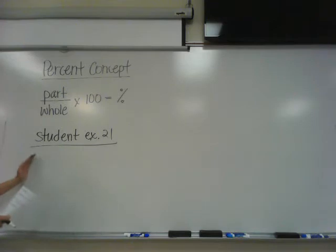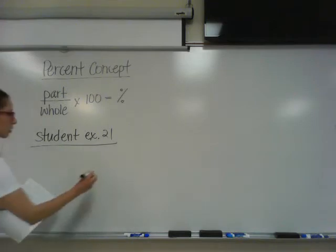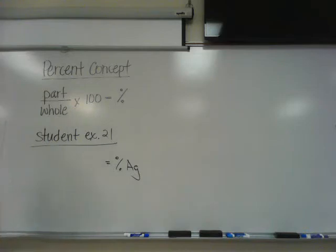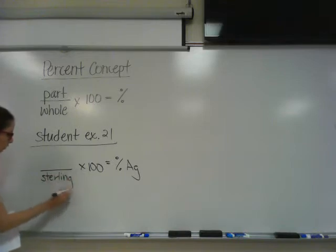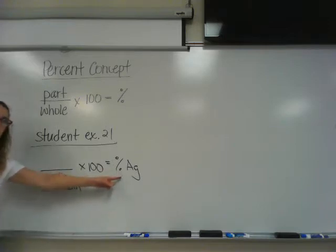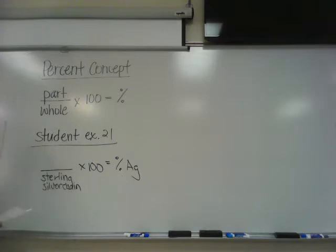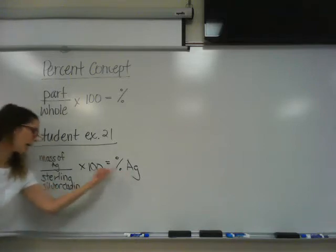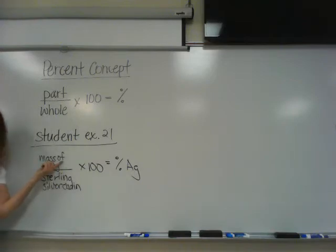So I should rewrite this equation to fit my problem. If I'm solving for the percent of silver, does everybody know that the symbol for silver is Ag? Well, you do now. So my whole is what? Sterling silver chain. So the sterling silver chain is my whole. What is my part if I'm solving for a percent of silver? This must be mass of silver. Whatever percent you're solving for, whatever that substance is, that is going to be here as your mass. Does that make sense?